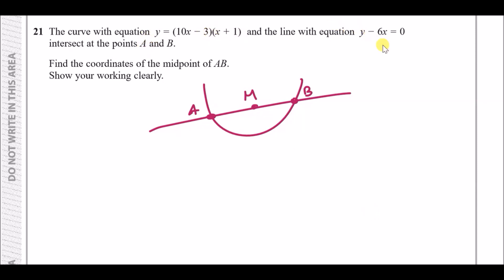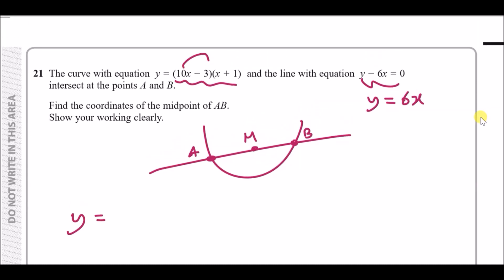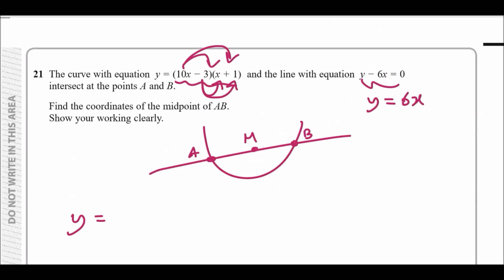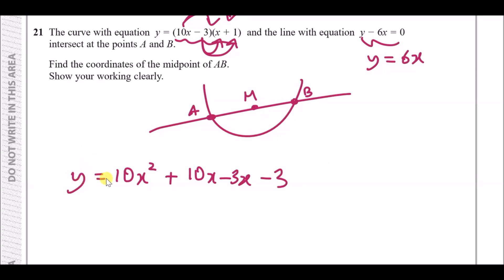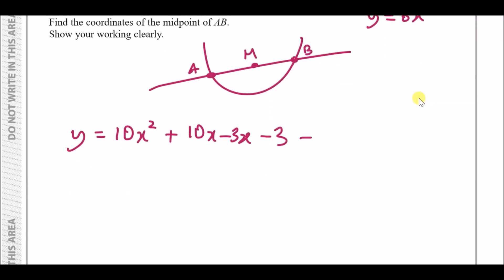First, make y the subject: y equals 6x. Now expand the curve's equation fully using FOIL: 10x times x, 10x times one, minus three times x, minus three times one. This gives 10x squared plus 10x minus 3x minus 3, and all of this also equals 6x.